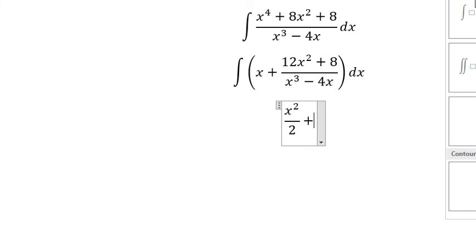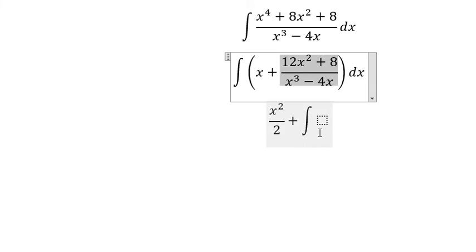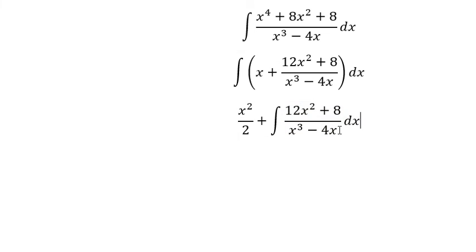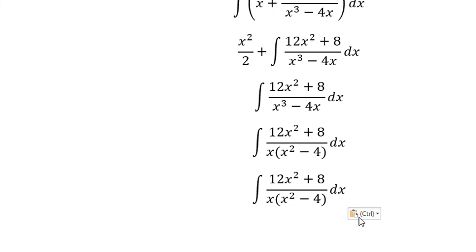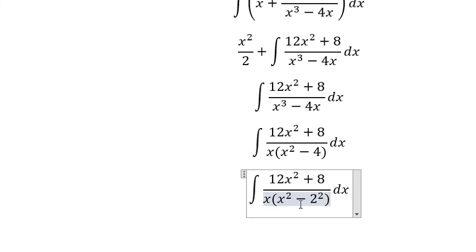Now we need to concentrate on this integral. We need to do factorization. This is the difference of squares identity: x squared minus 4 equals (x minus 2)(x plus 2). So we need to transform this denominator into x(x minus 2)(x plus 2).